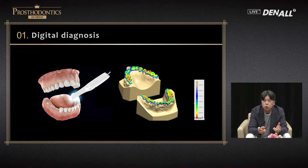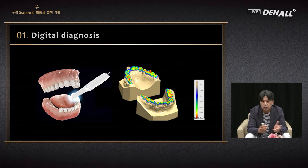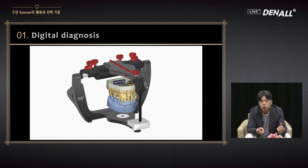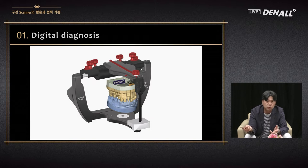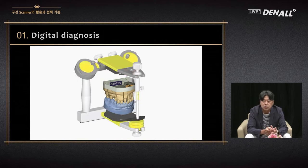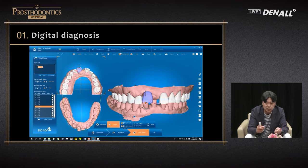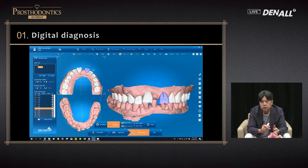For diagnosis and treatment planning, image data after scanning can be used to analyze occlusion, premature contact, or occlusal force. Depending on the software, your favorite articulator can be selected and mounted virtually to analyze occlusion — replacing the physical model mounting done in the past. Using an ortho or diagnosis program, patient data can be uploaded, a tooth can be extracted or moved, and spaces can be created or filled on the software.